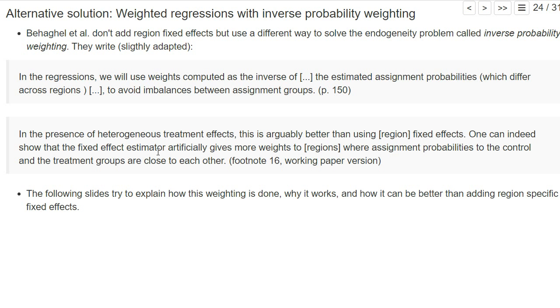One can indeed show that the fixed effect estimator artificially gives more weights to regions where assignment probabilities to the control and treatment groups are closer to each other. So what it basically means is that the fixed effect estimator does not compute the average over heterogeneous treatment effects that we actually wanted to compute. It's not this complier average treatment effect, but it weights the regions in a funny way.